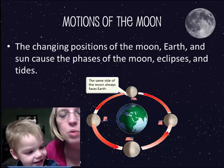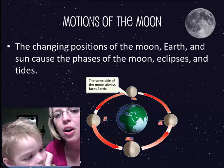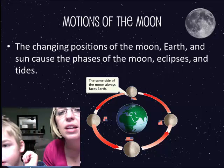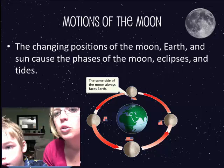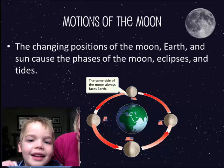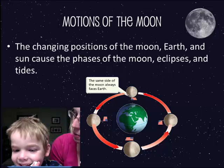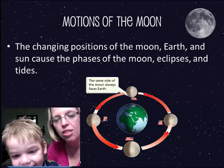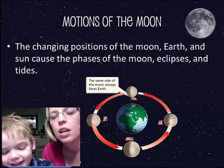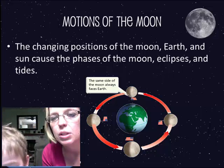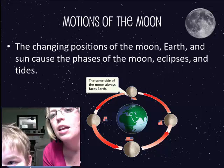The moon phases are kind of hard to grasp in your head — why you see different positions or different shadings of the moon. Tonight, when Owen and I were out visiting my grandpa, we saw a tiny crescent moon, like the tip of a thumbnail, and it was bright orange.